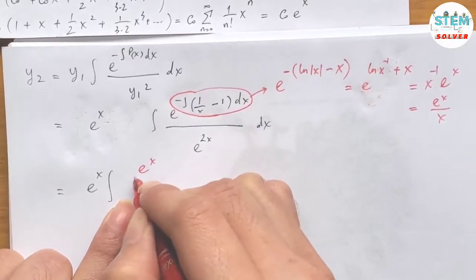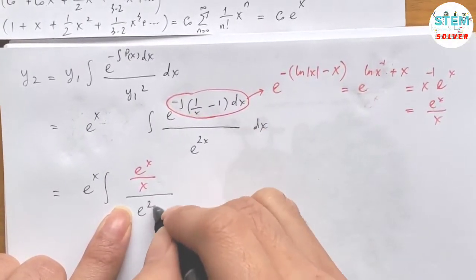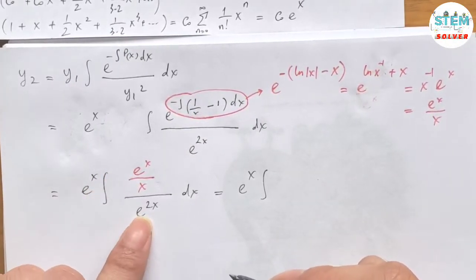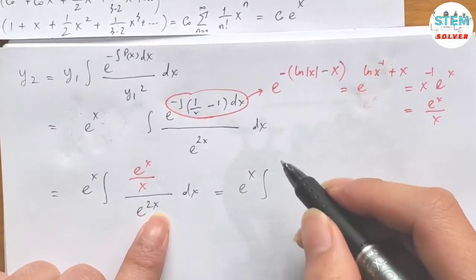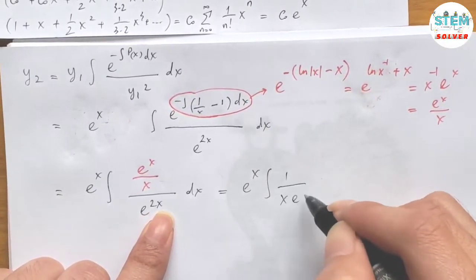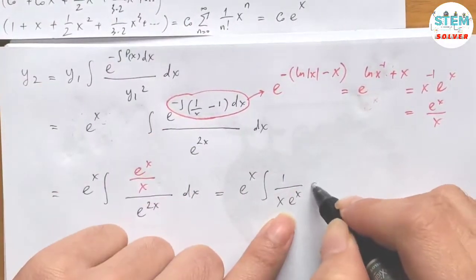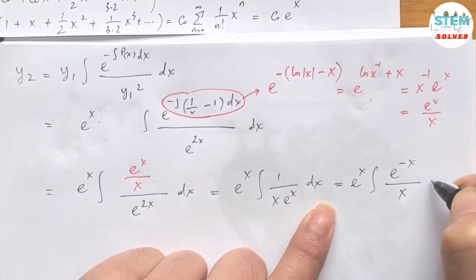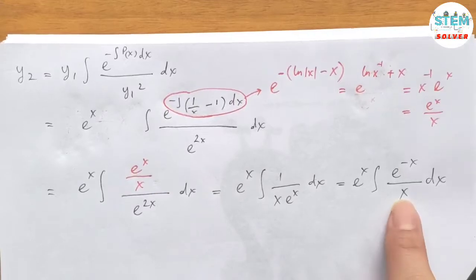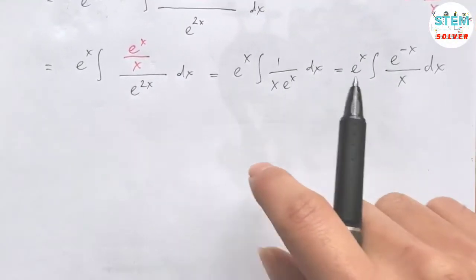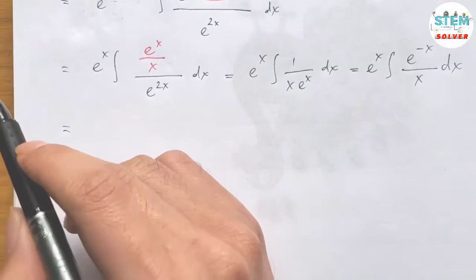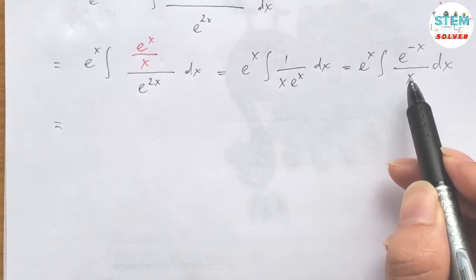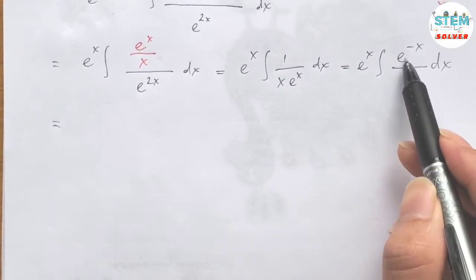So the expression inside the integral becomes (e to the x over x) divided by e to the 2x dx, which simplifies to 1 over x times e to the negative x dx, or e to the negative x over x dx. Since we cannot integrate this directly, we will rewrite e to the negative x as a power series.